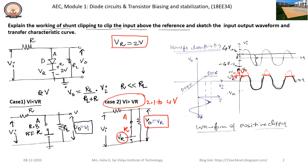The transfer characteristics curve is shown in this figure. For input voltage less than the reference voltage of 2 volts, the output voltage equals the input voltage. For input voltage values greater than the reference voltage, the output voltage equals the reference voltage. During this condition, the diode is on. For input voltage less than the reference voltage, the diode is off.